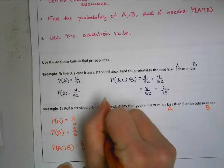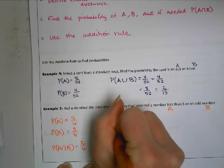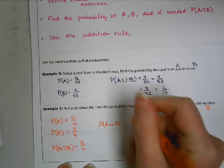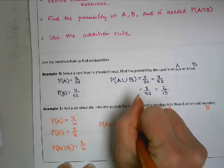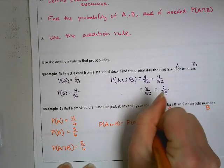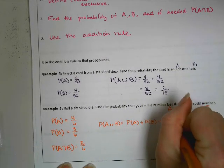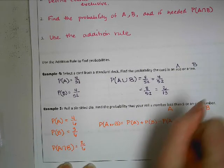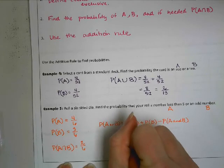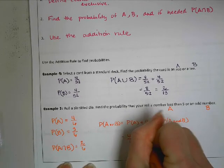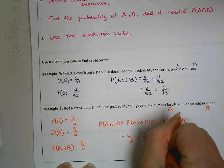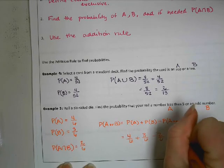Alright, so now when I'm doing probability of A or B, I have to subtract off the overlap. So, I'm going to use probability of A plus probability of B minus the overlap. So, that's going to be 4 over 6 plus 3 over 6 minus 2 over 6. Which makes it 5 over 6.